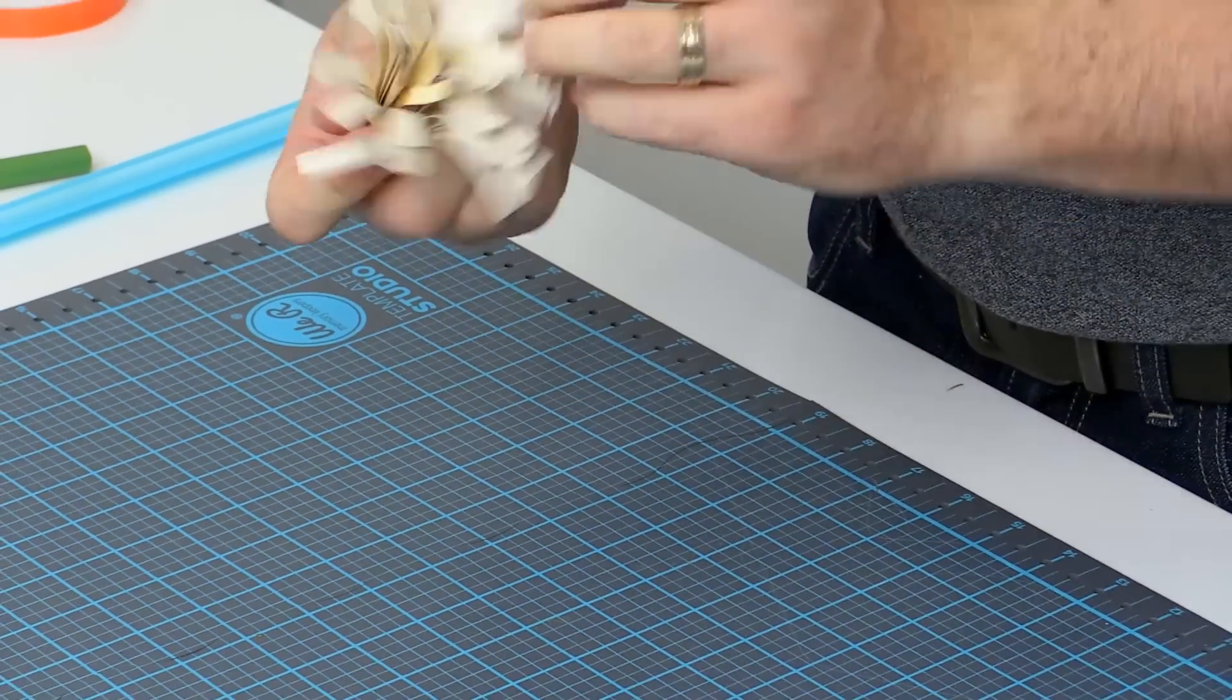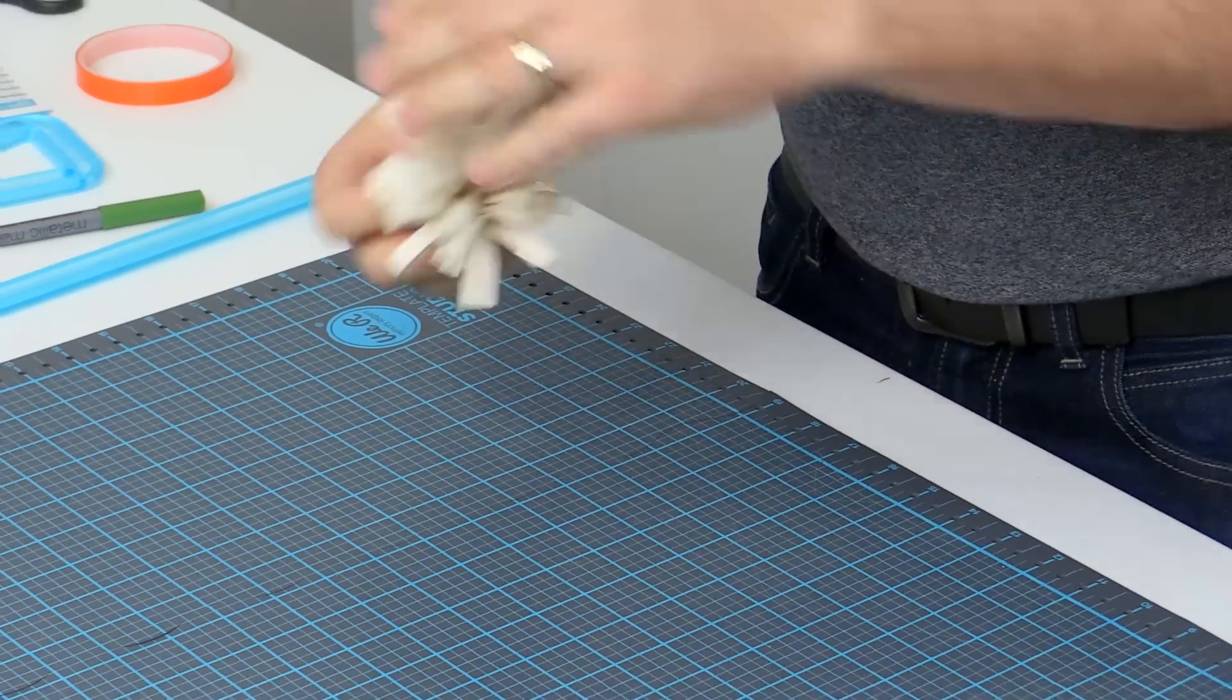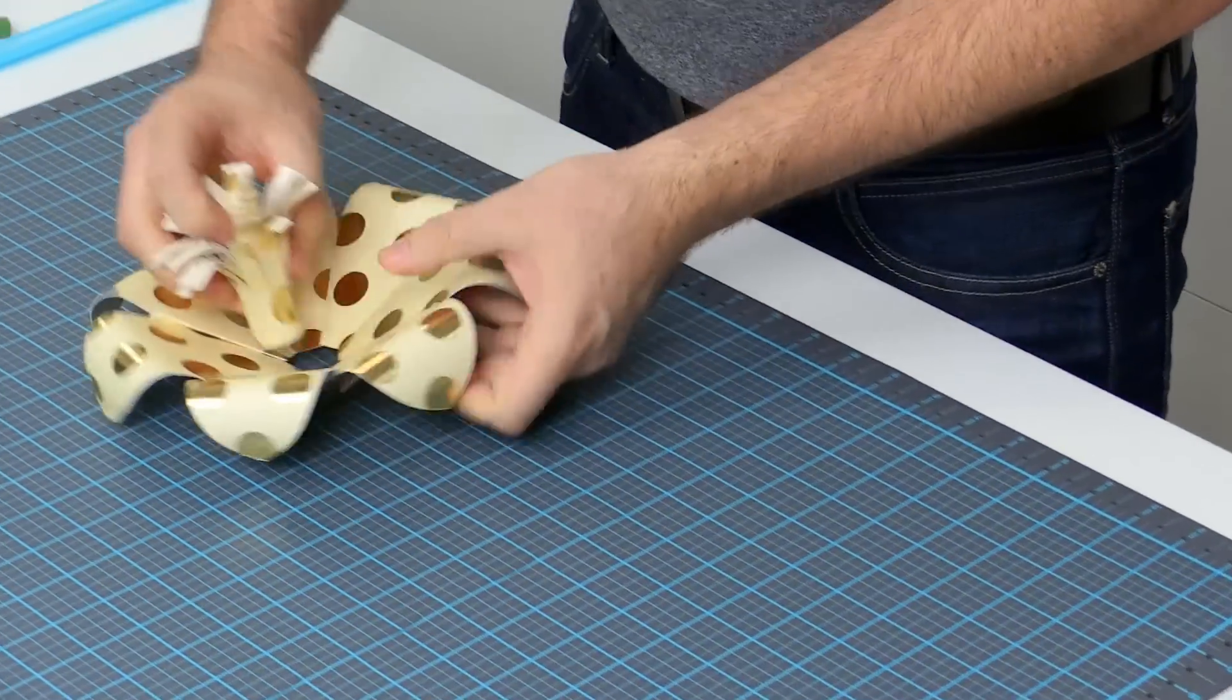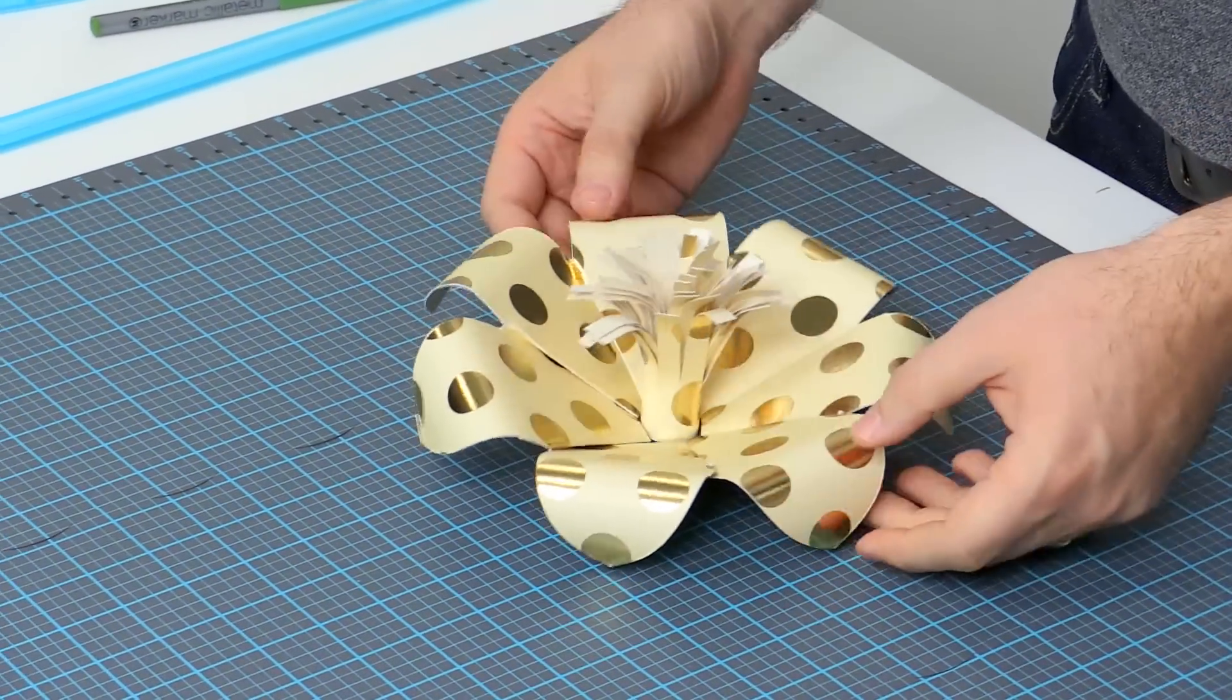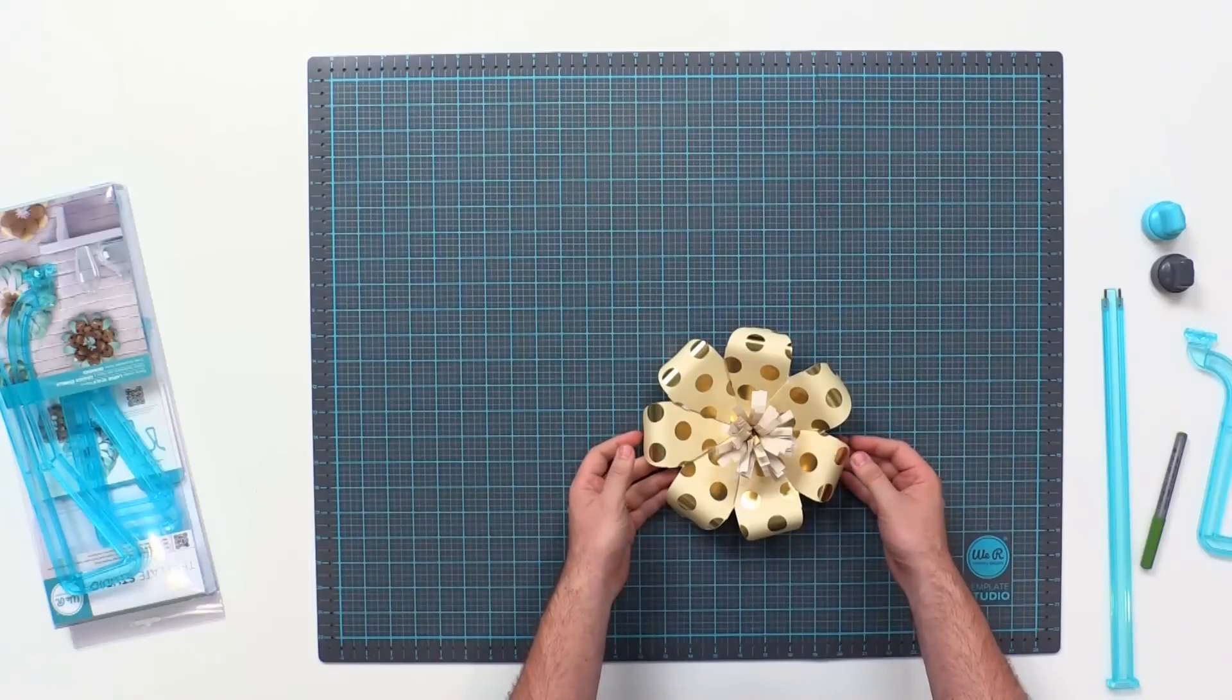Mess it up a little bit just to keep it, give some dimension there. And then we can come in and we can place it there in the center. And there we have our finished flower.